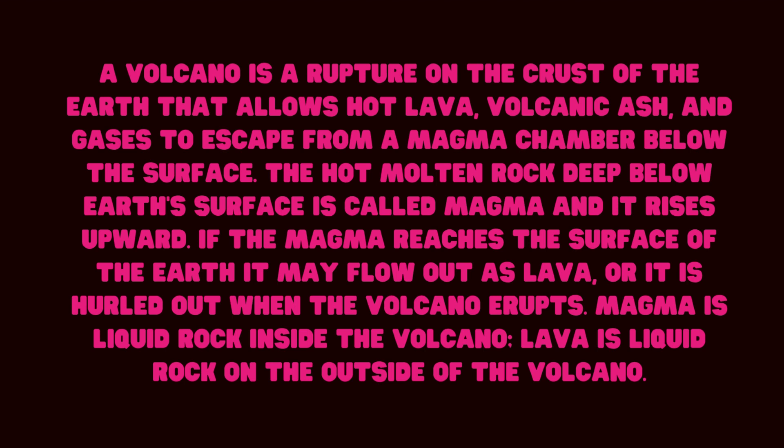The hot molten rock deep below the earth's surface is called magma, and it rises upward. If the magma reaches the surface of the earth, it may flow out as lava or it is hurled out when the volcano erupts. Magma is liquid rock inside the volcano, while lava is liquid rock on the outside of the volcano.